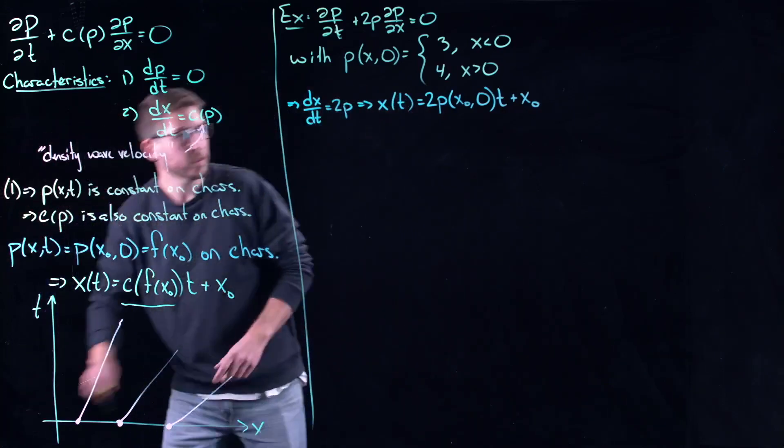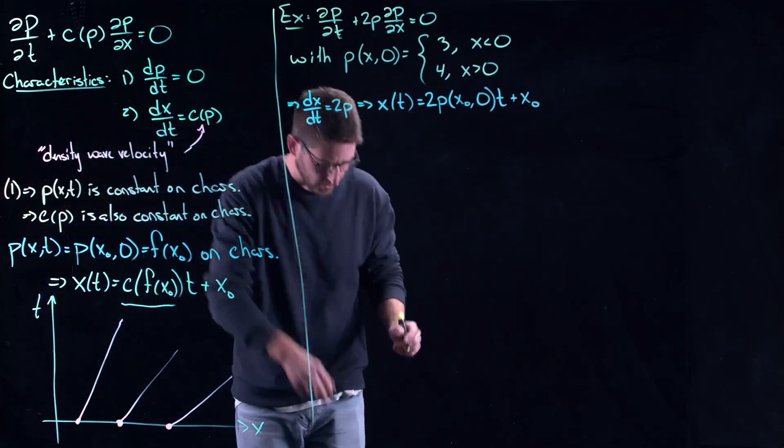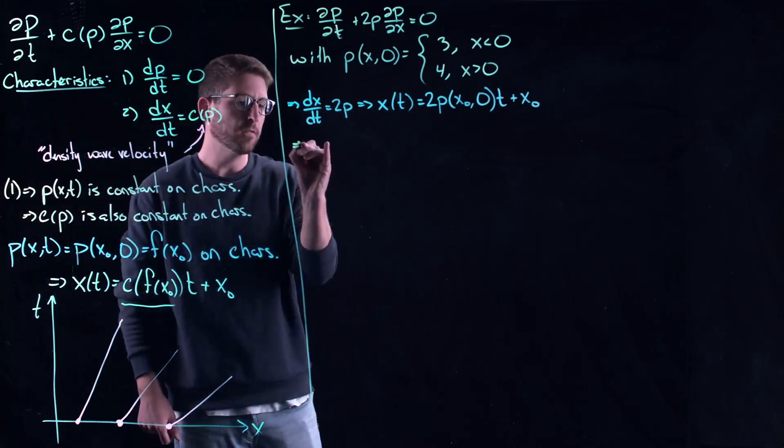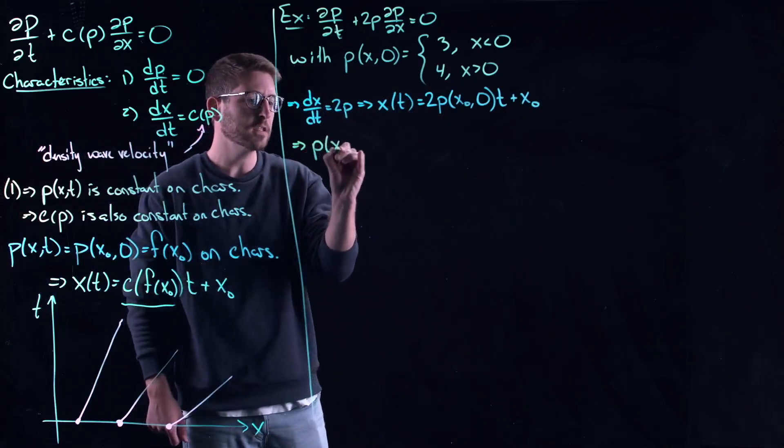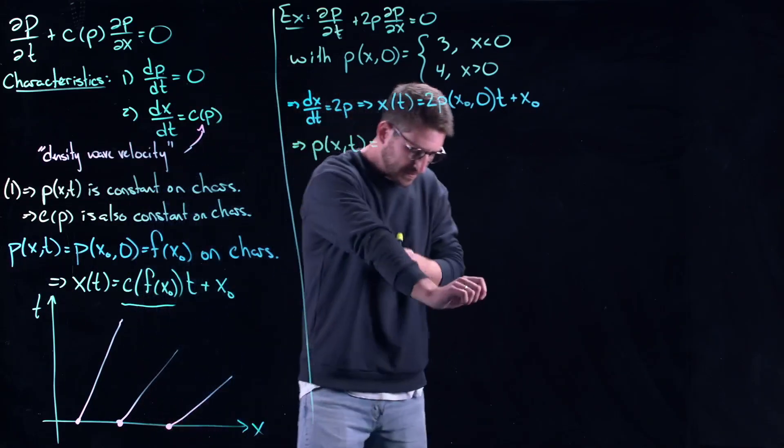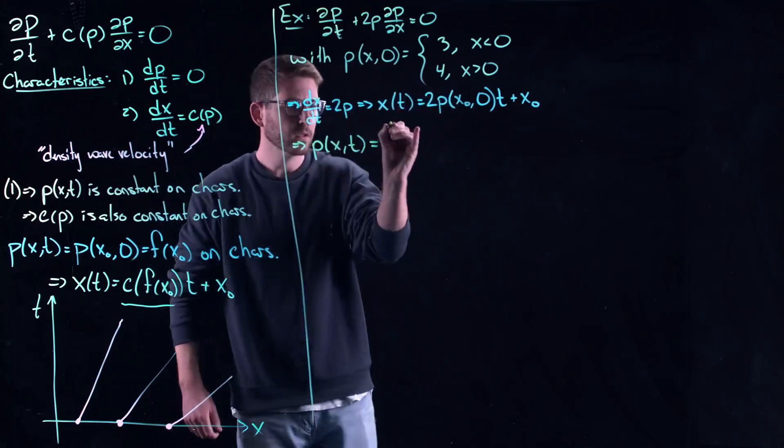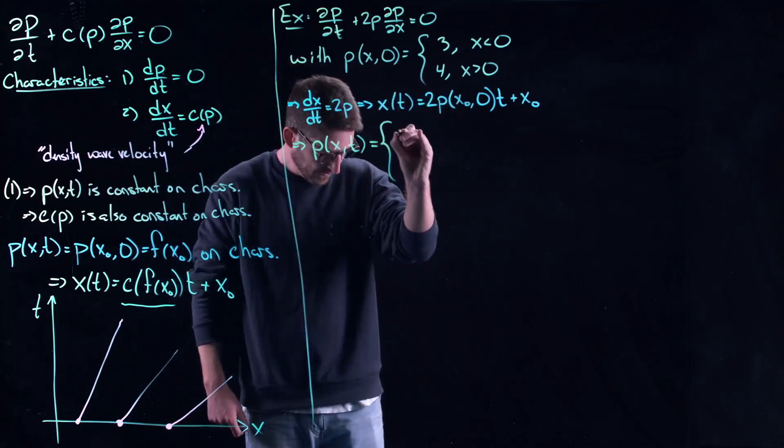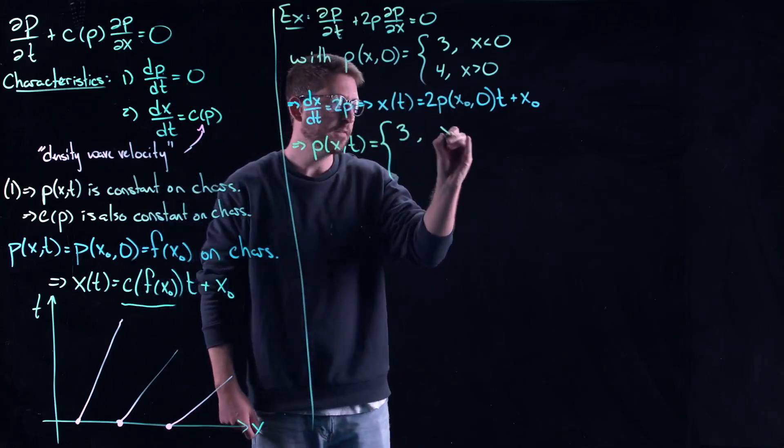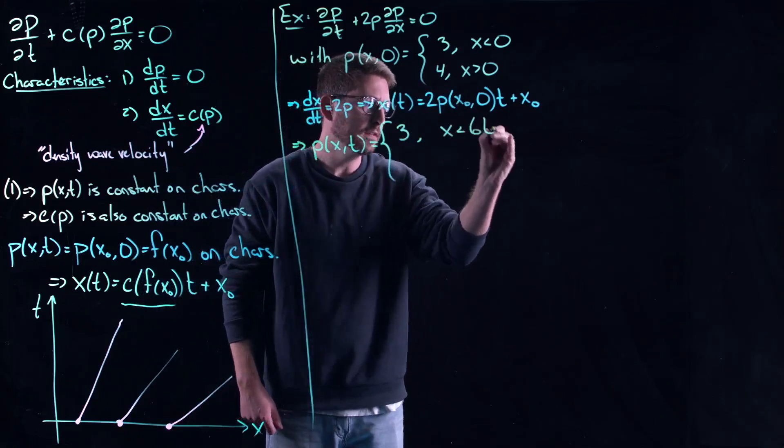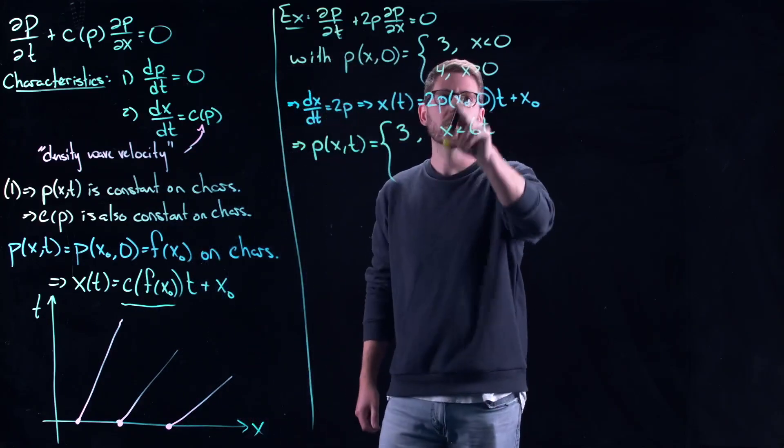When I put this back into the solution, following our method of characteristics that we've worked through a couple times now, this gives me the solution: it gives me 3 if x is less than 6t.